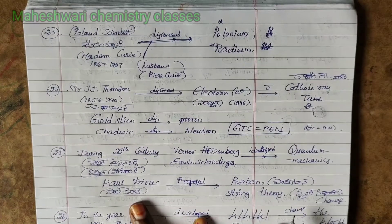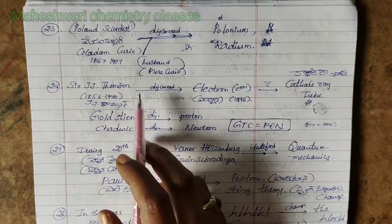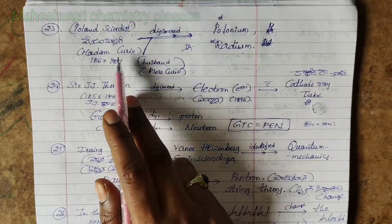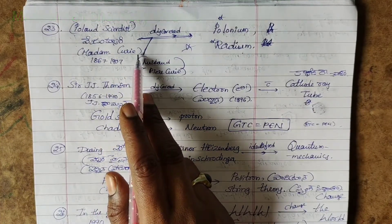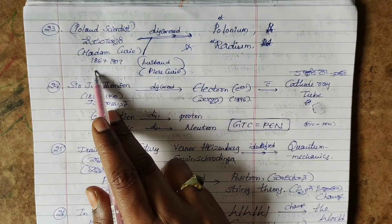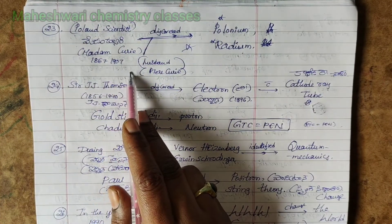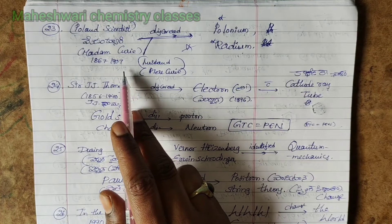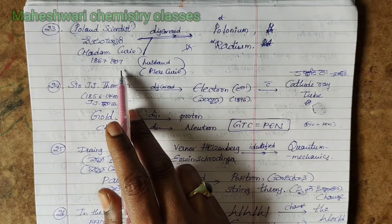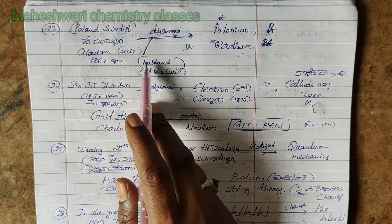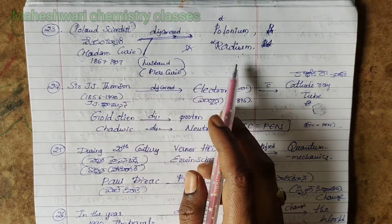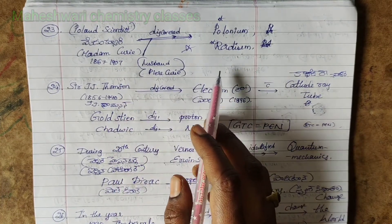23rd point: Polish scientist Madame Curie, 1867 to 1934. She is a great scientist who discovered polonium and radium.